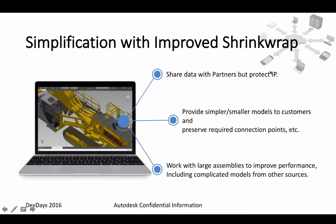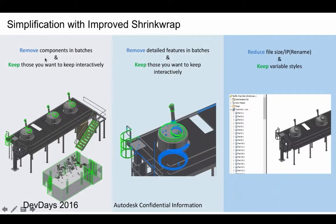Simplification with improved shrink wrap: there are three main reasons to use shrink wrap. First, share data with partners but protect your IP — intellectual property. Second, provide simpler, smaller models to customers and preserve required connection points. Third, work with large assemblies to improve performance, including complicated models from other sources.